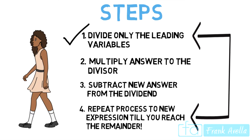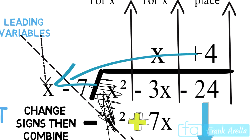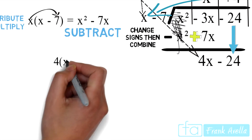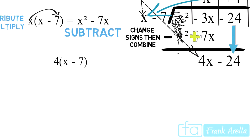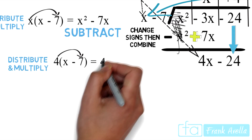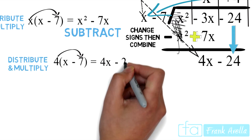On to Step 2 again, which is to multiply. We take the positive 4 and multiply it by x minus 7. Distributing, we multiply 4 times x and 4 times negative 7, which gives us 4x minus 28.